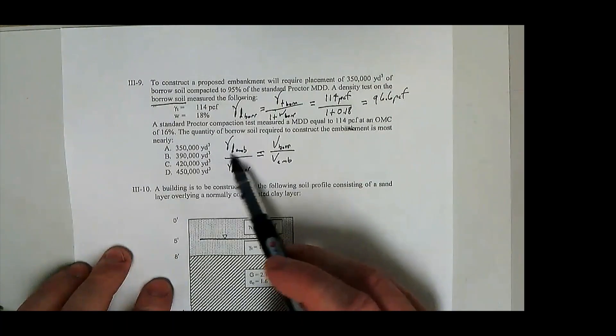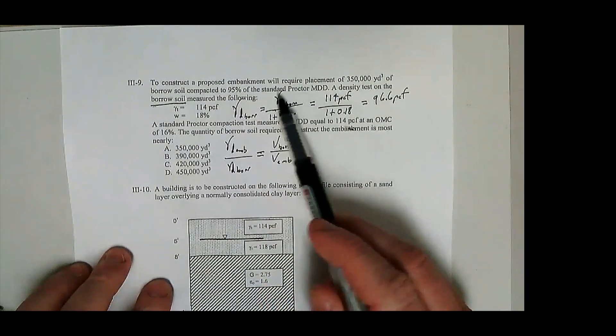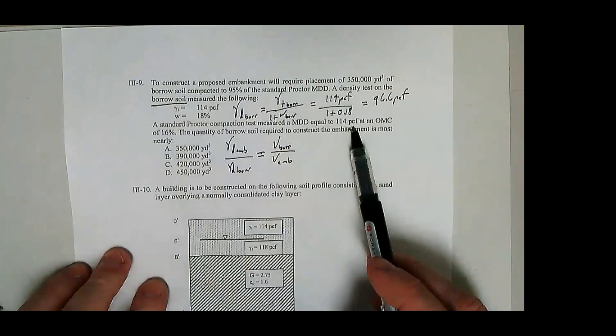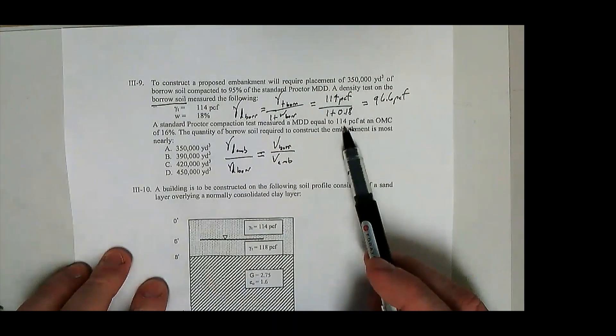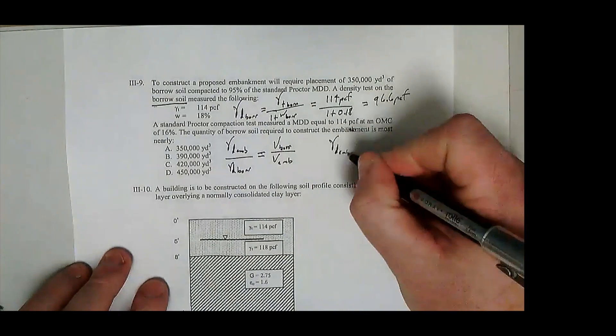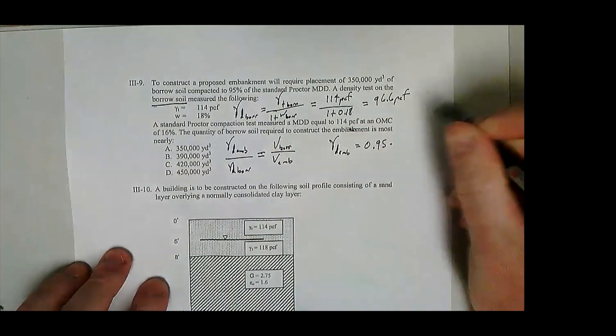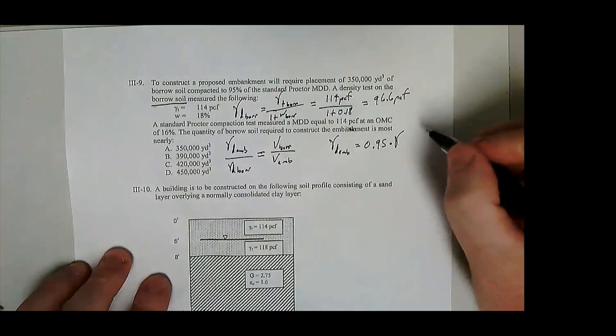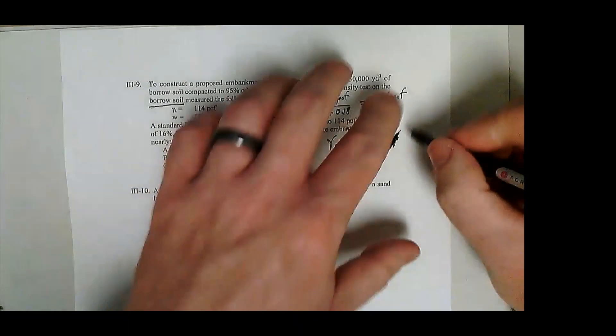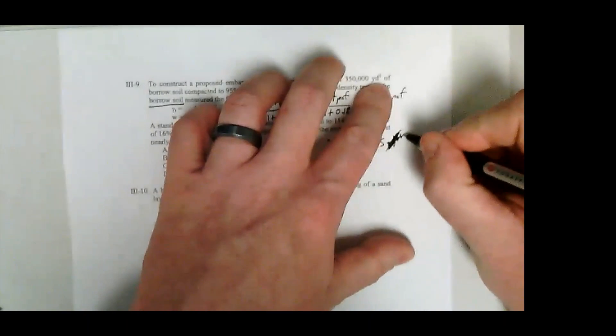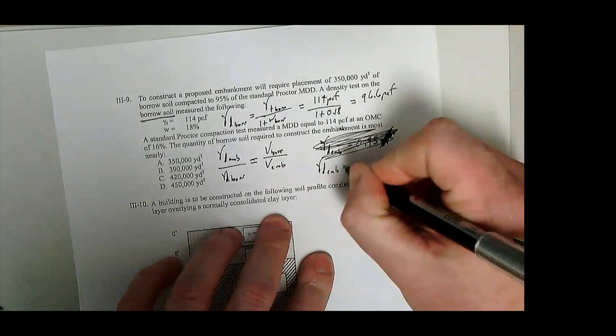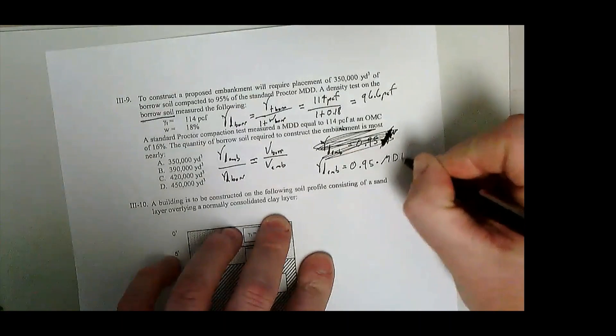But what are we going to compact it to? Gamma d embankment. Remember, we're going to compact it to 95% of the standard proctor maximum dry density. We ran a standard proctor on that material and it's 114 pounds per cubic foot. So 95% of that value is what we're going to be compacting at to expressed in terms of dry density. So gamma d embankment is equal to 0.95 times - you know what let's just rewrite this. Gamma d embankment is equal to 0.95 times mdd, right, maximum dry density.